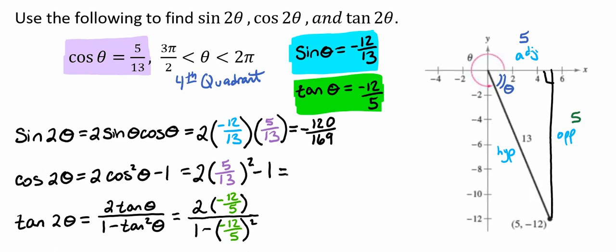If we plug in 2 times 5 over 13 quantity squared minus 1 into our calculator, we'll end up getting negative 119 divided by 169.